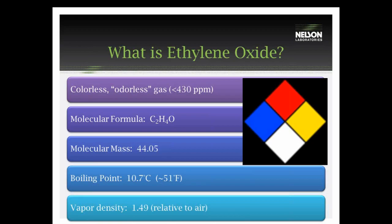Ethylene oxide sterilization is a commonly used low-temperature sterilization process. It uses ethylene oxide gas, which is a colorless, odorless gas. It is a known carcinogen and mutagen, so you take extra precautions when using this sterilization. These are just some scientific facts about the molecule and give you a brief, quick overview of the molecule itself.